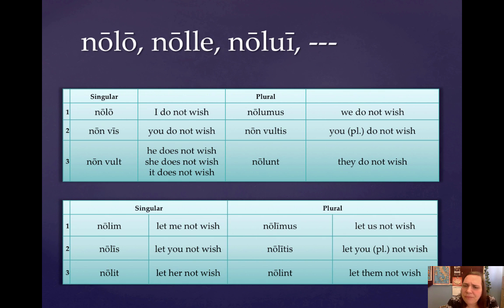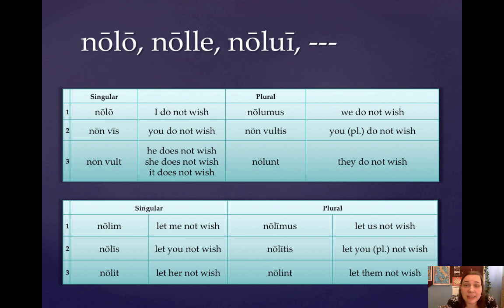And then in the present active subjunctive, it follows the general subjunctive conjugation of esse: nolim, nolis, nolit, nolimus, nolitis, nolint.